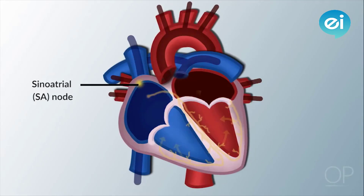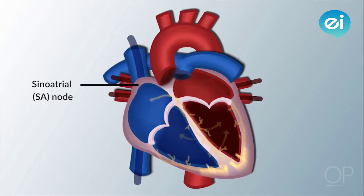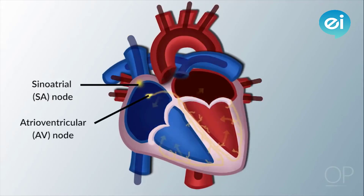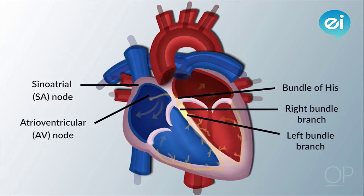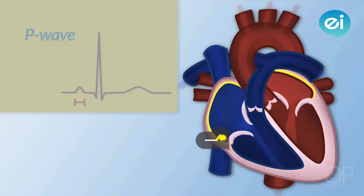Electrical impulses originate in the sinoatrial node, located at the junction of the right atrium and superior vena cava. The electrical impulses generated from the SA node travel through the right and left atrium, causing the atria to contract. The impulse then travels to the atrioventricular node — AV node — then to the bundle of His, and finally through the right and left bundle branches of the ventricles, causing the ventricles to contract. The P wave of the electrocardiogram represents atrial contraction.